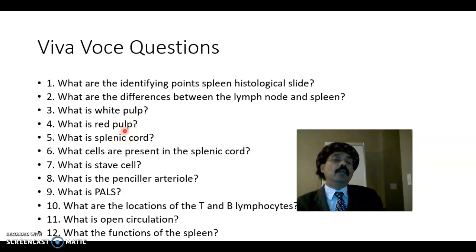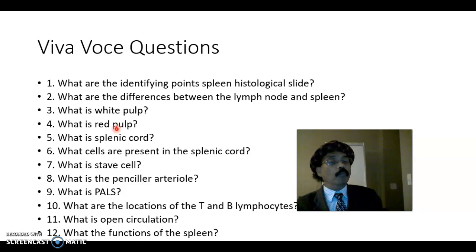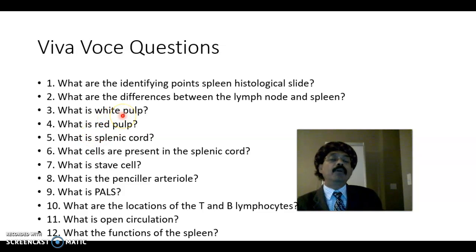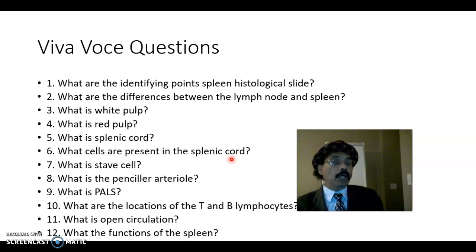What is red pulp? Red pulp is composed of the splenic sinusoids and the splenic cord, which is composed of reticular cells, reticular fiber, antigen-presenting cells, T lymphocytes, B lymphocytes, and macrophages, as well as other white blood cells including all granulocytes. This forms the maximum part of the spleen. What cells are present in the splenic cord? The splenic cord contains macrophages, antigen-presenting cells, T and B lymphocytes, granulocytes, and all blood cells including RBCs, WBCs, and platelets.